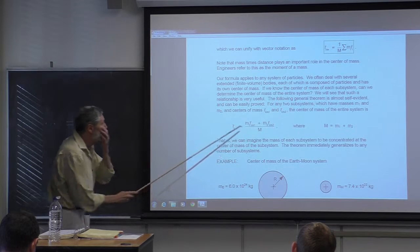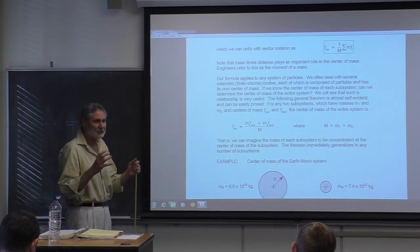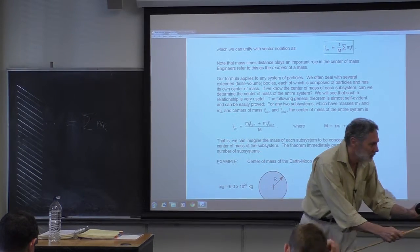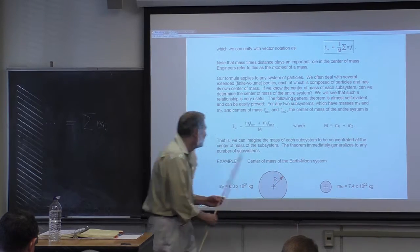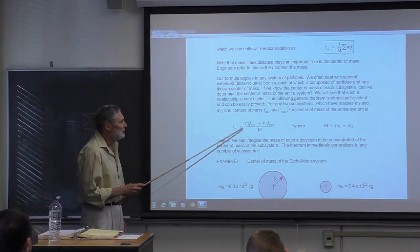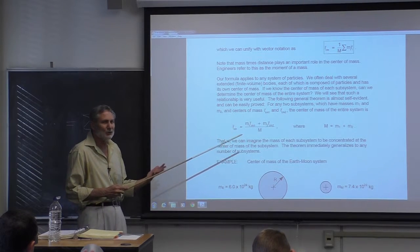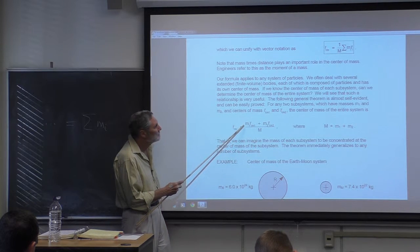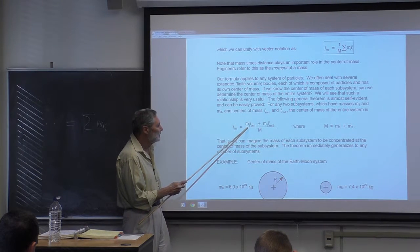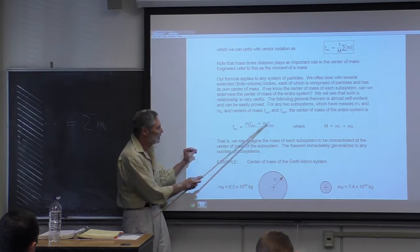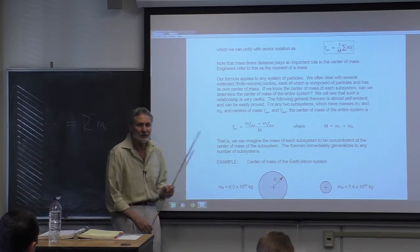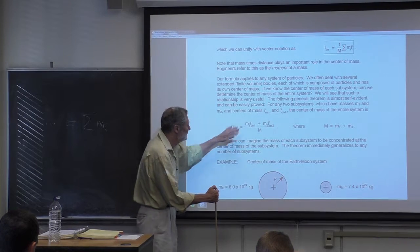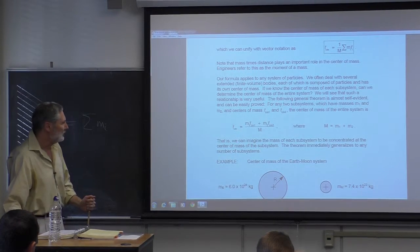So we essentially have a two-particle system — we find the moments of each subsystem, imagine each subsystem's mass concentrated at its center of mass, and do what we did before. It's obvious and easy to prove. A good example of that is the earth-moon system.